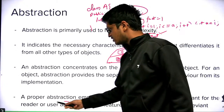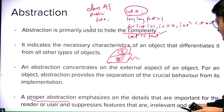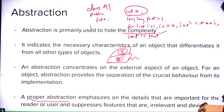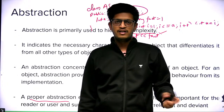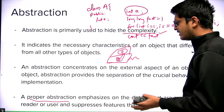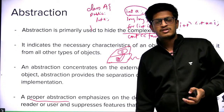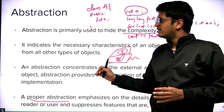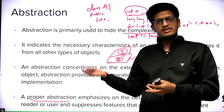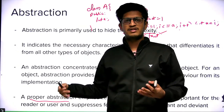A proper implementation of abstraction emphasizes the details that are important for the reader or user, and suppresses the features that are irrelevant. You just know the necessary details required to operate on this class. Encapsulation helps us achieve both data hiding and abstraction. Abstraction is also a feature of encapsulation in C++.